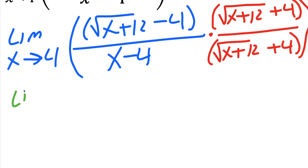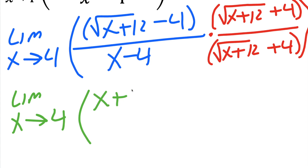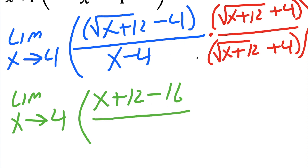The next step is to multiply out and expand. The square root of x plus 12 times the square root of x plus 12 gives us x plus 12. The cross terms — negative 4 times the square root and positive 4 times the square root — cancel out. Our last piece is negative 4 times 4, which is negative 16, divided by our denominator.